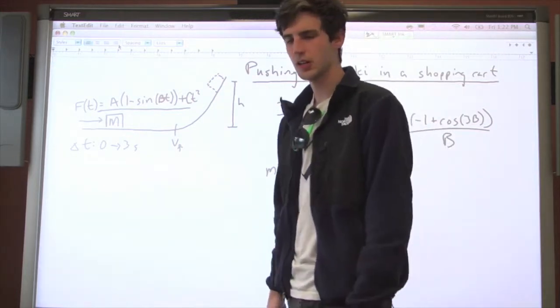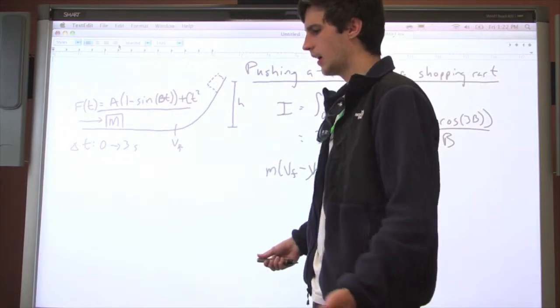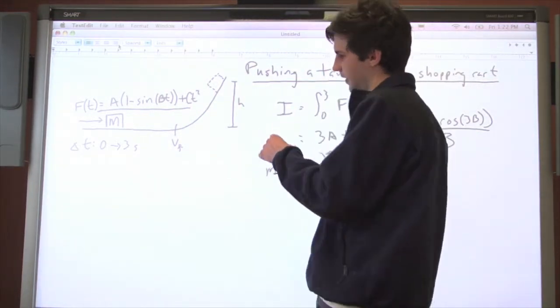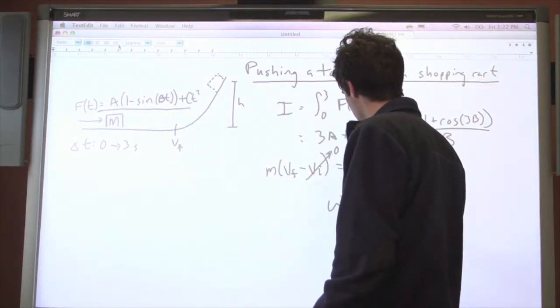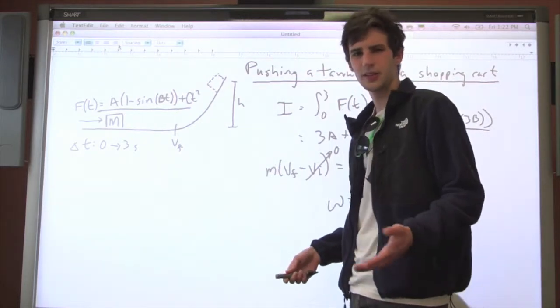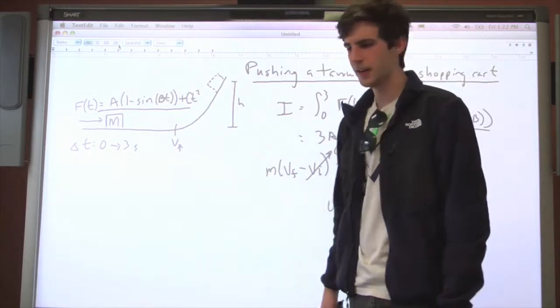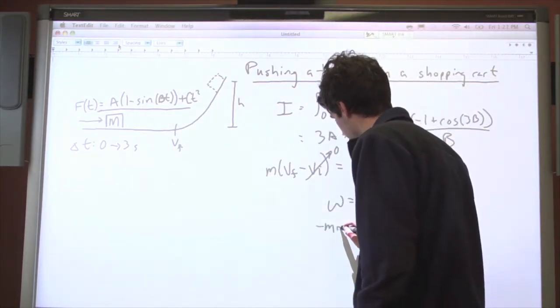Okay, so now we're just going to go about this like a normal work energy problem, and we're going to say, hey, let's make our system the tanuki in the shopping cart, and let's say that the work is done by gravity on it. And we know from past experience that the only thing that's going to change in this situation is the translational kinetic energy, and the work done by this is going to be minus mgh.